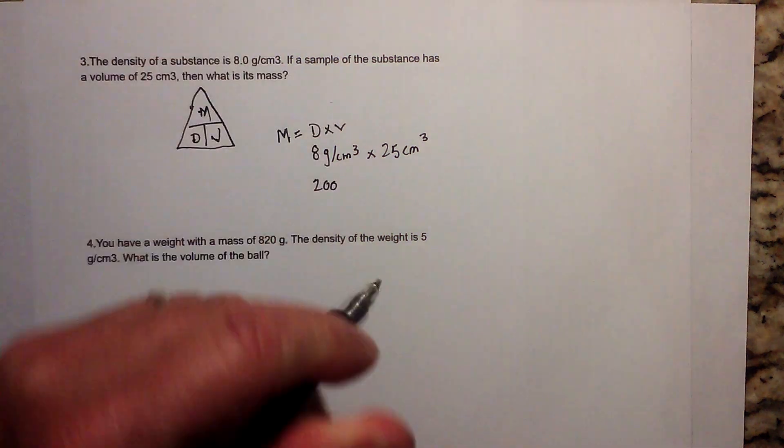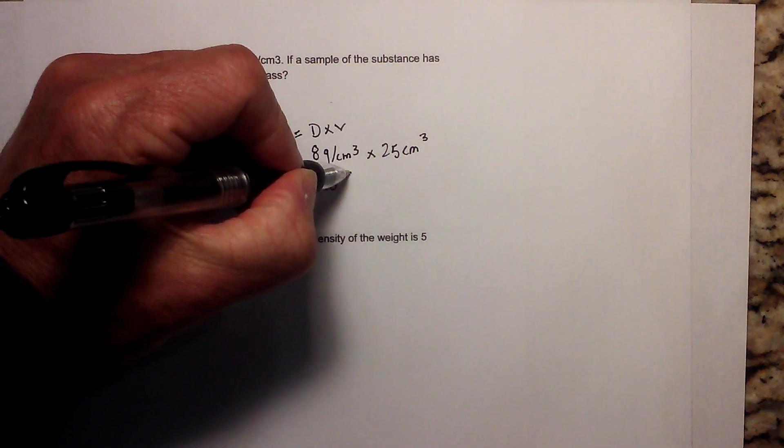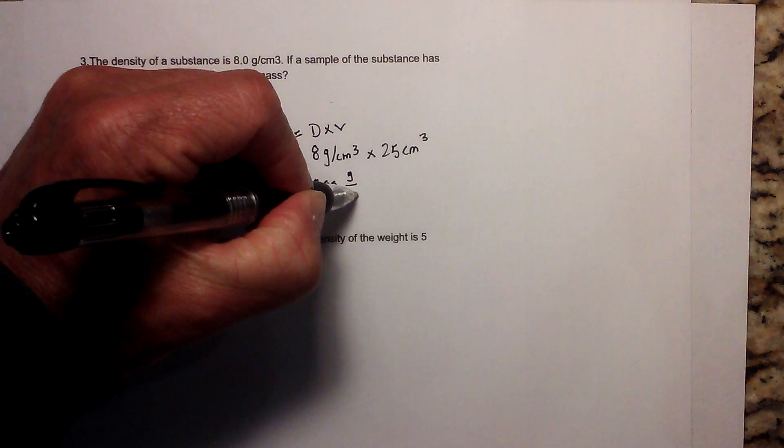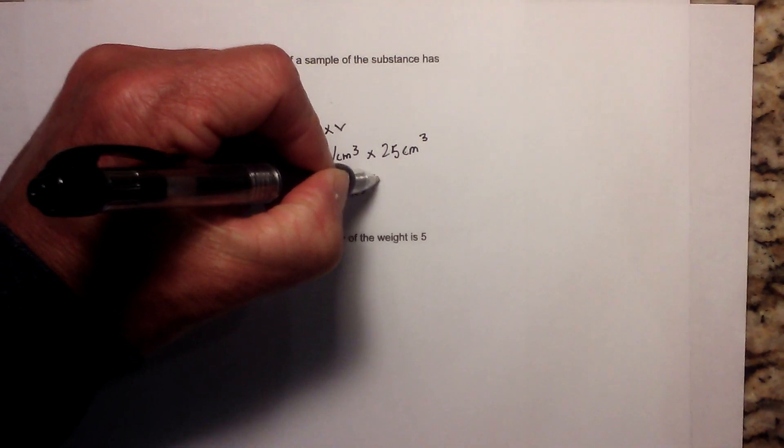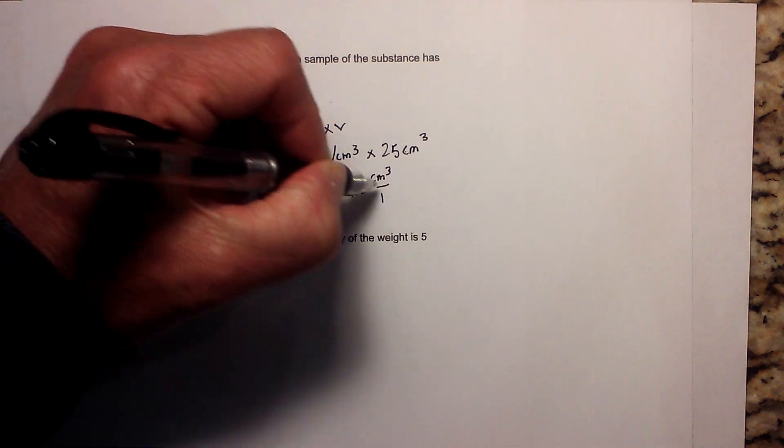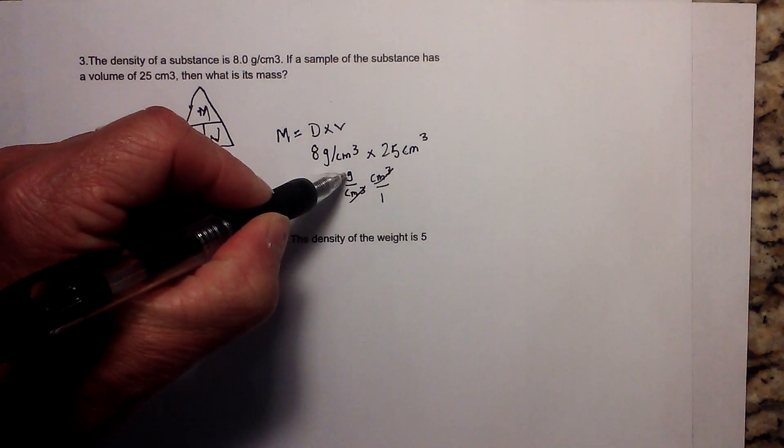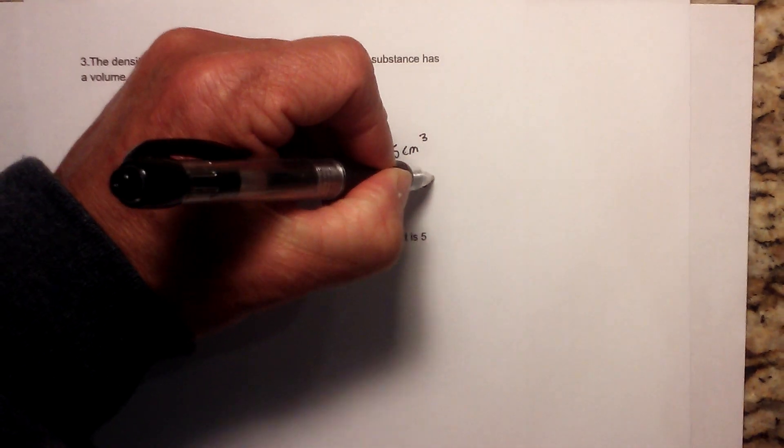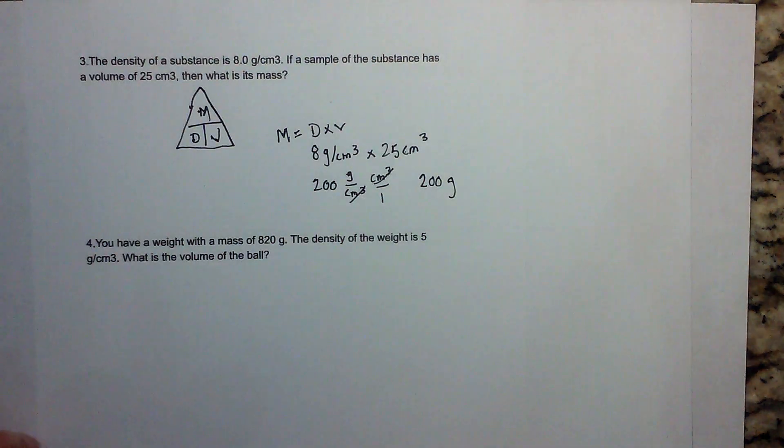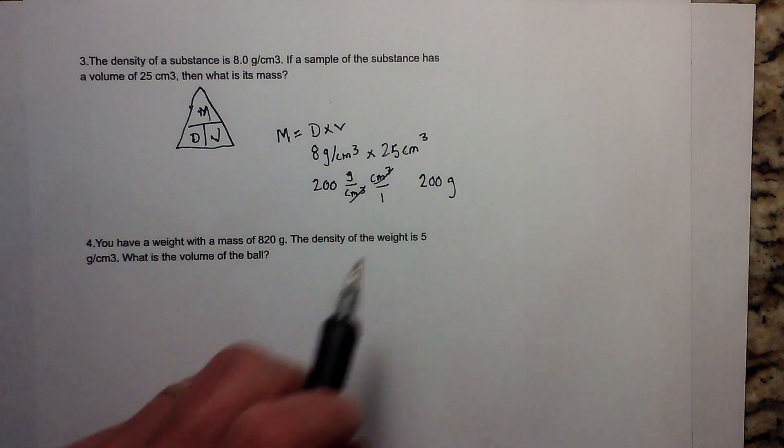Now what do we do with our units? If you want to look at this, this is grams over centimeters cubed, and this would be centimeters cubed over 1. These cancel and you're left with grams over 1, or grams, so it becomes 200 grams. Make sure that the units are done properly.